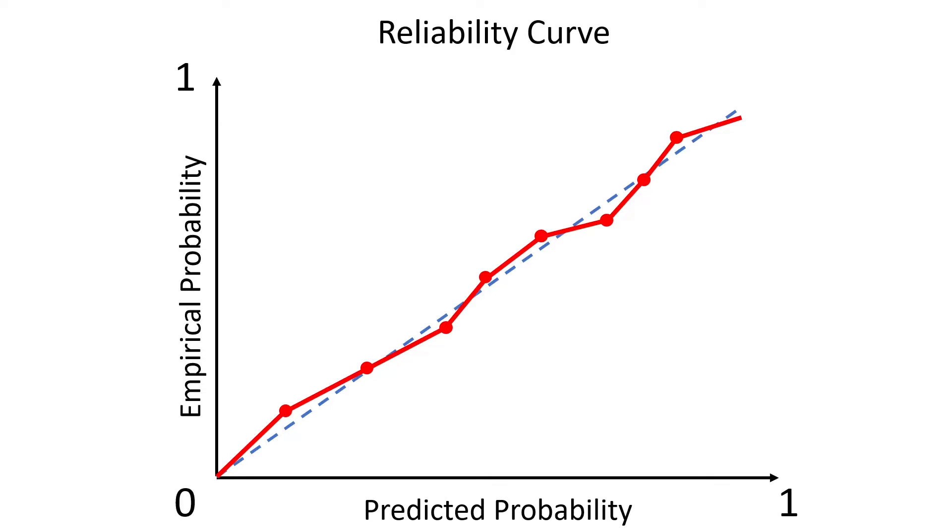However, there are quite a few techniques that bring the reliability curve closer to the blue line, but they are beyond the scope of this video. Now we can finally talk about the main topic of this video, the estimated calibration error or ECE for short. We will do that by firstly showing how we compute the reliability curve because these two topics are closely related.